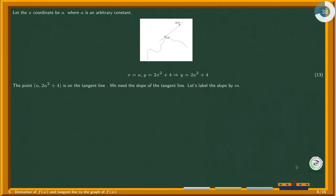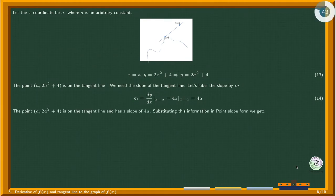We need the slope of the tangent line. Let's label the slope by m. To find the slope of the tangent line at x equals A, differentiate and plug in x equals A. The point (A, 2A² plus 4) is on the tangent line, and the tangent line has a slope of 4A. Substituting this information in point-slope form we get the equation.